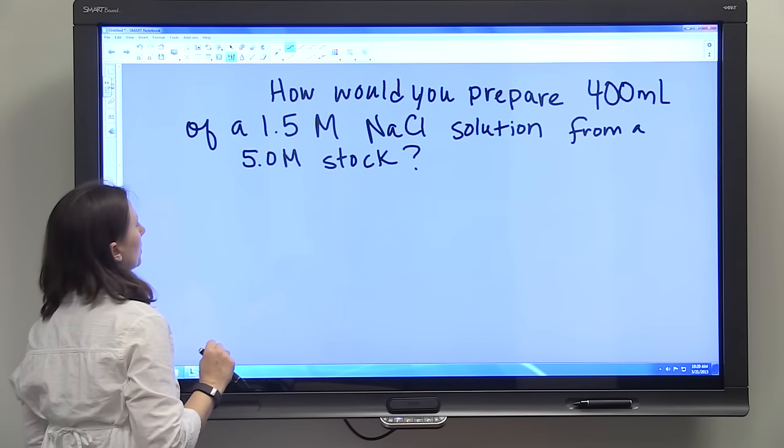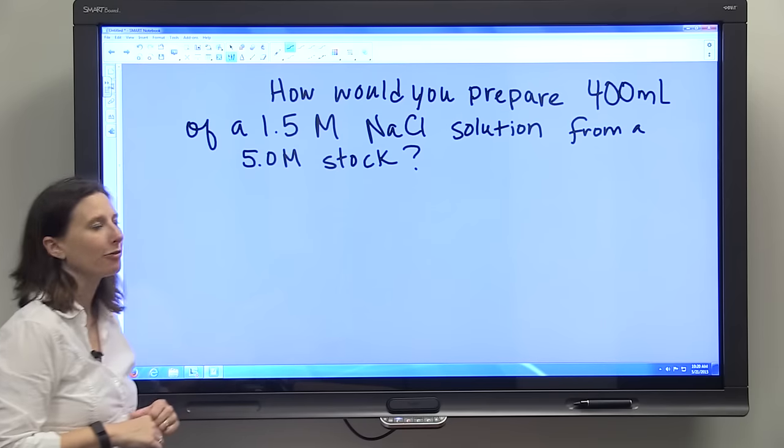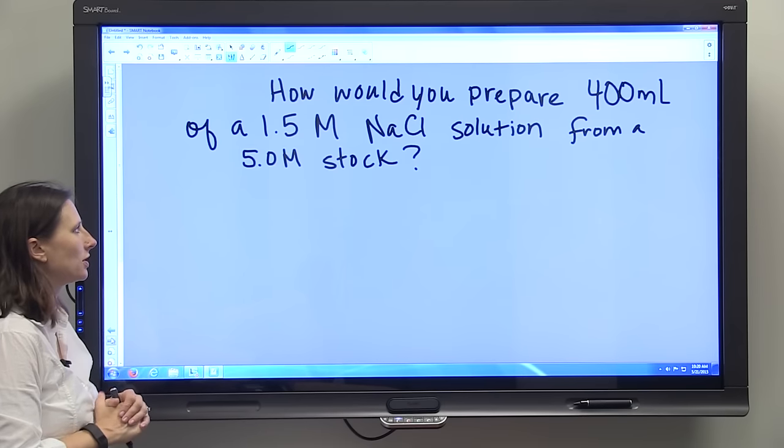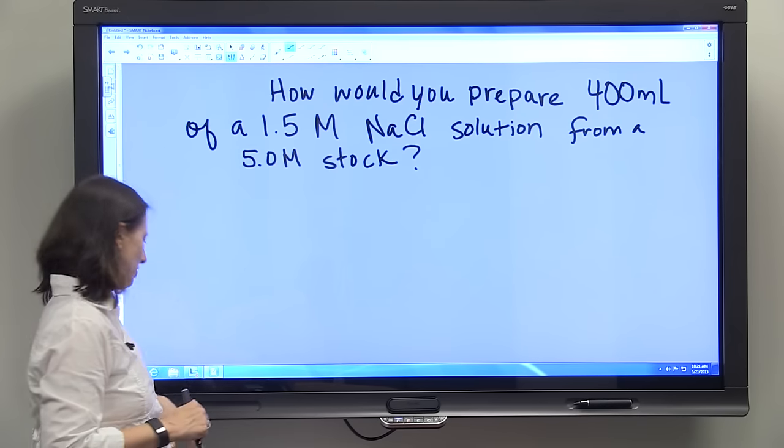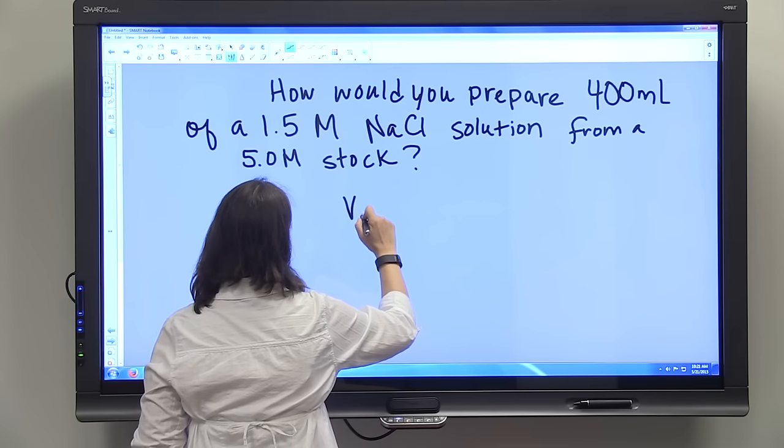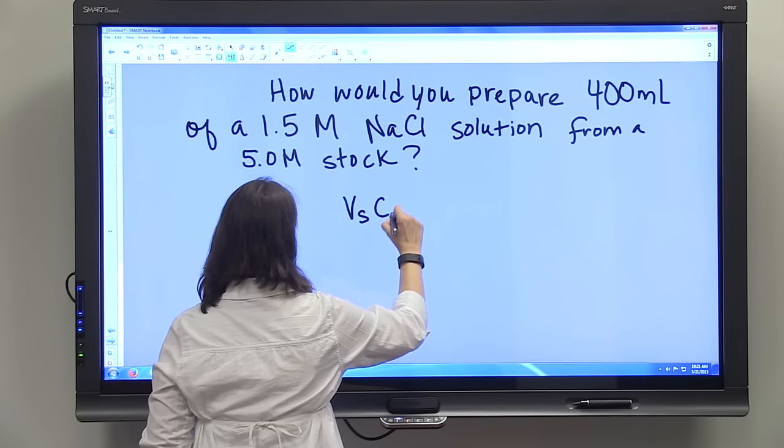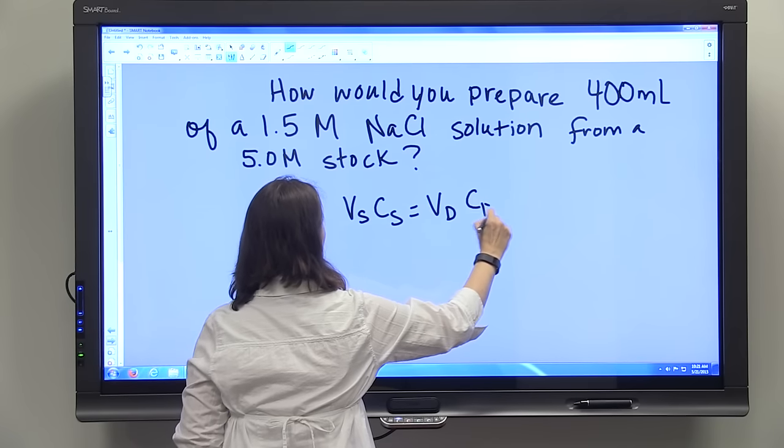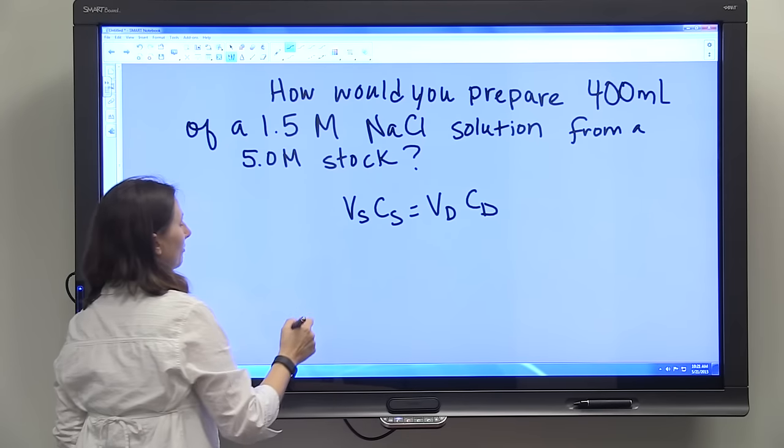Let's go through a quick example. How would you prepare 400 mL of a 1.5 molar sodium chloride solution from a 5 molar stock? We're going to start with our VsCs = VdCd equation.